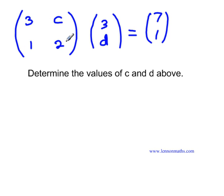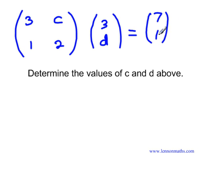We have the entries in the first matrix, which is a 2 by 2 matrix. And what we have here is a 2 by 1 matrix. Over here, we have a 2 by 1 matrix as well, so this one is pretty similar to this one.